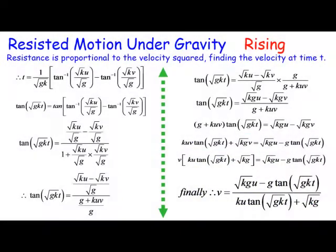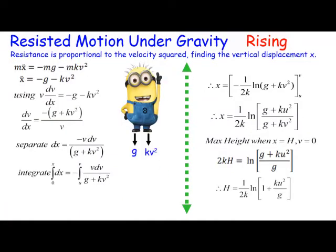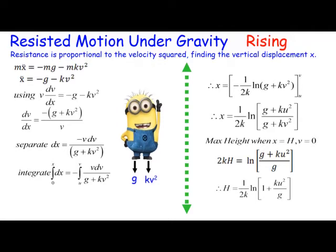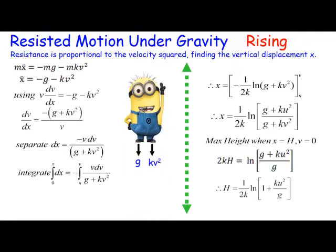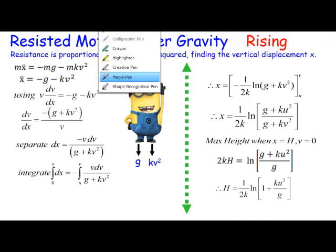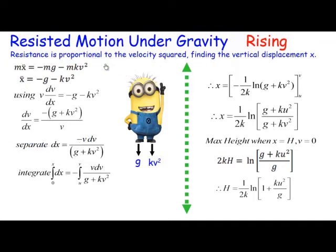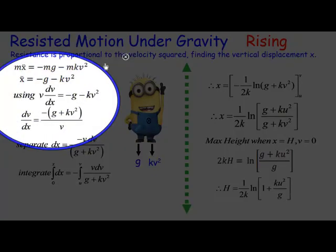That's the velocity at a time t. And how about the height? Well, we rewrite the equations of motion. Obviously the minion is rising, it's going to be rising up this direction, and resistance is kv squared and gravity acting in the opposite direction to the net force mx double dot. That's why we have negative signs. Now we're going to use the acceleration expression v dv dx because we want x, basically the position.